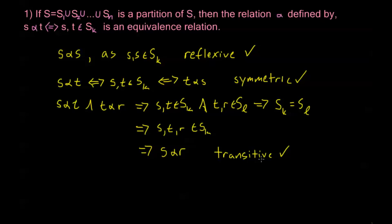So we have two different directions we can go. Anytime we have an equivalence relation, that defines some partition of the set we're taking the relation on. And if we ever have a partition of a set, that partition itself defines an equivalence relation as well.